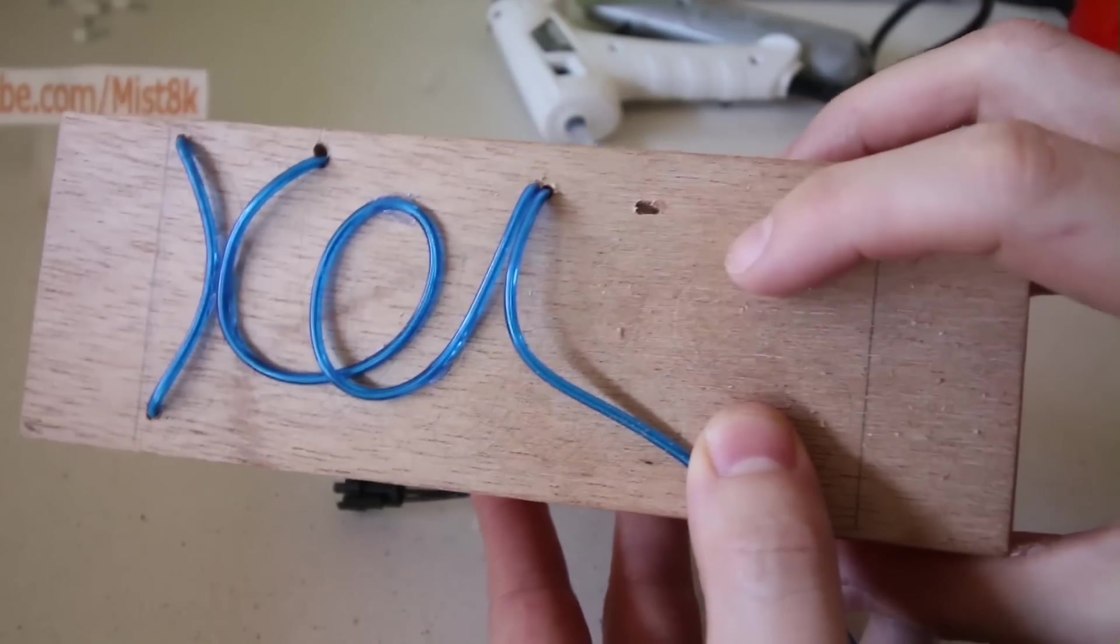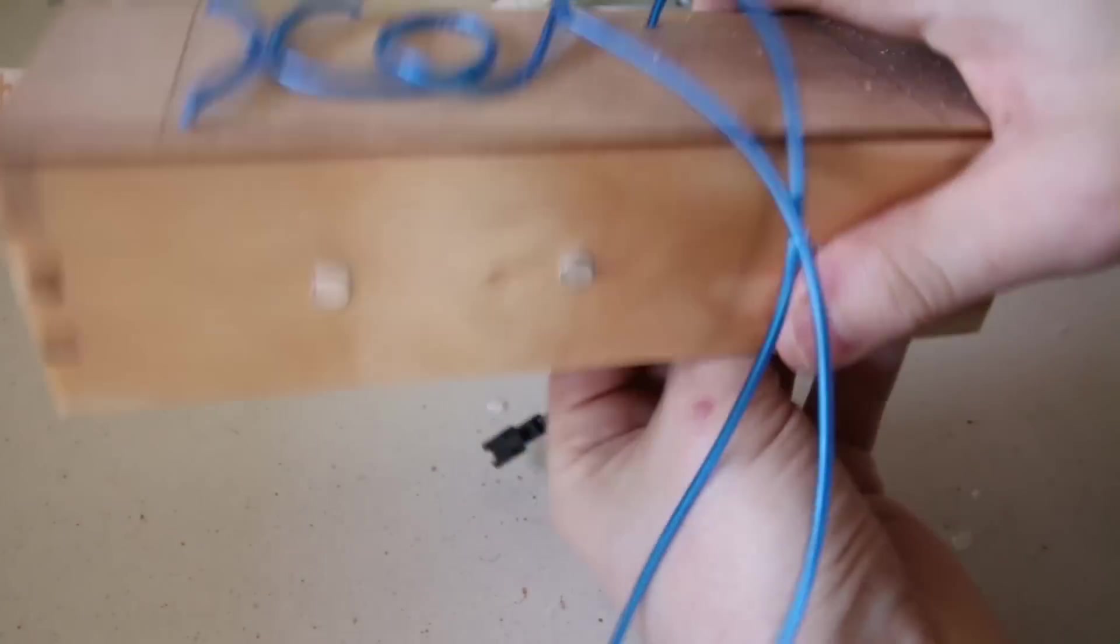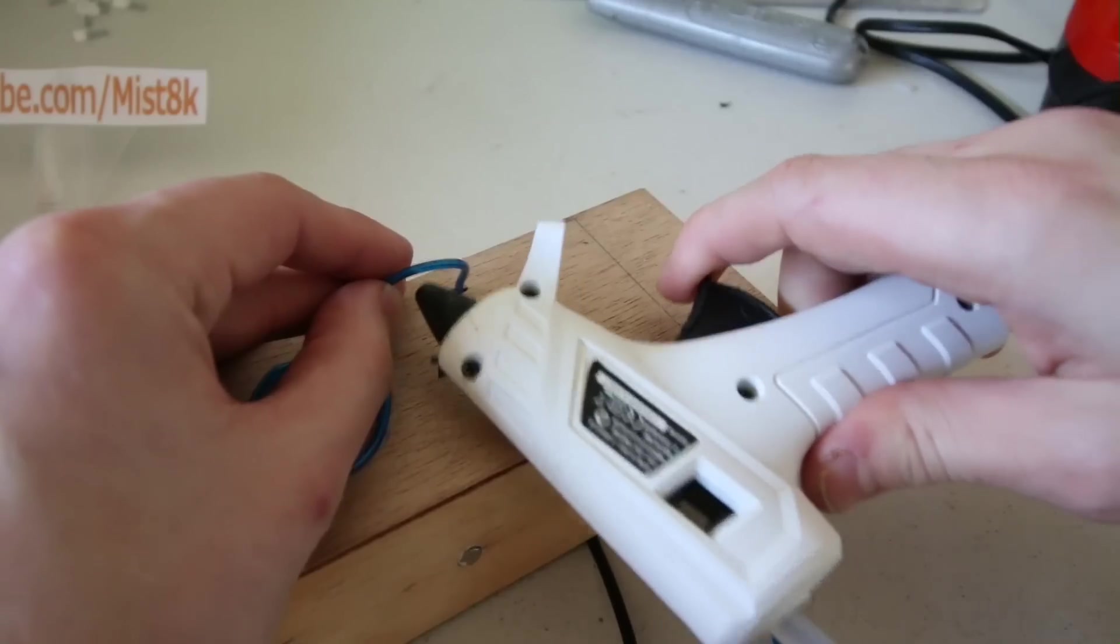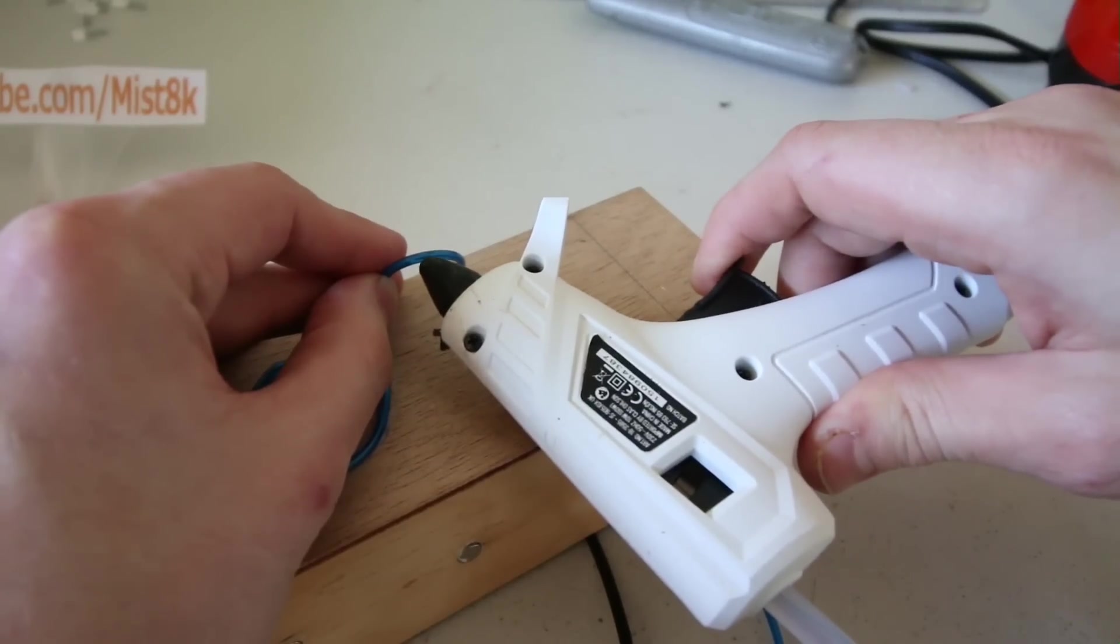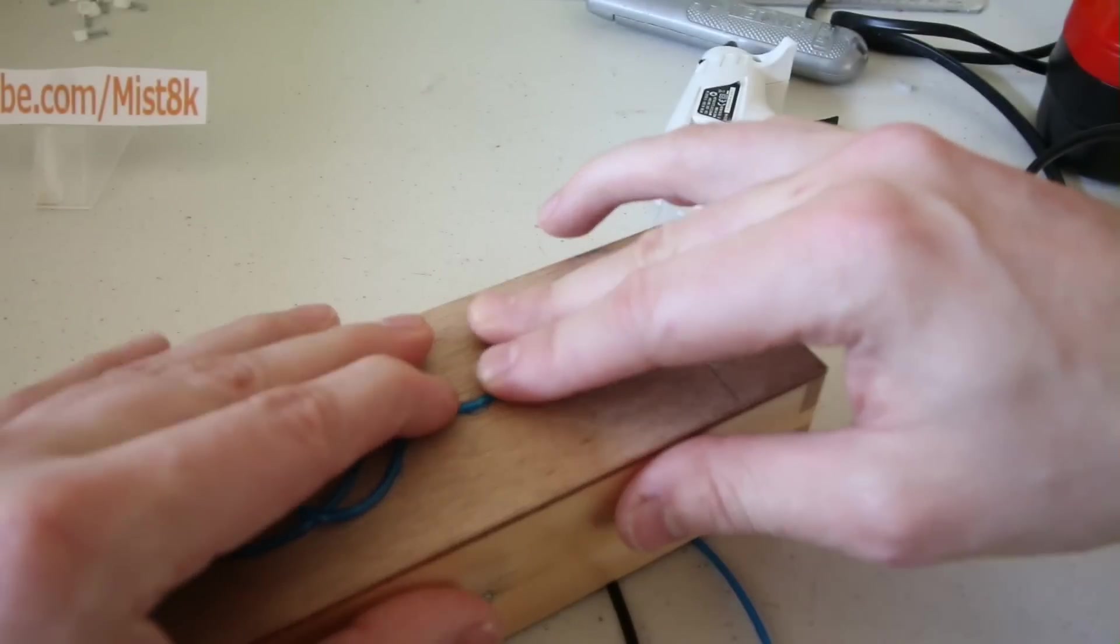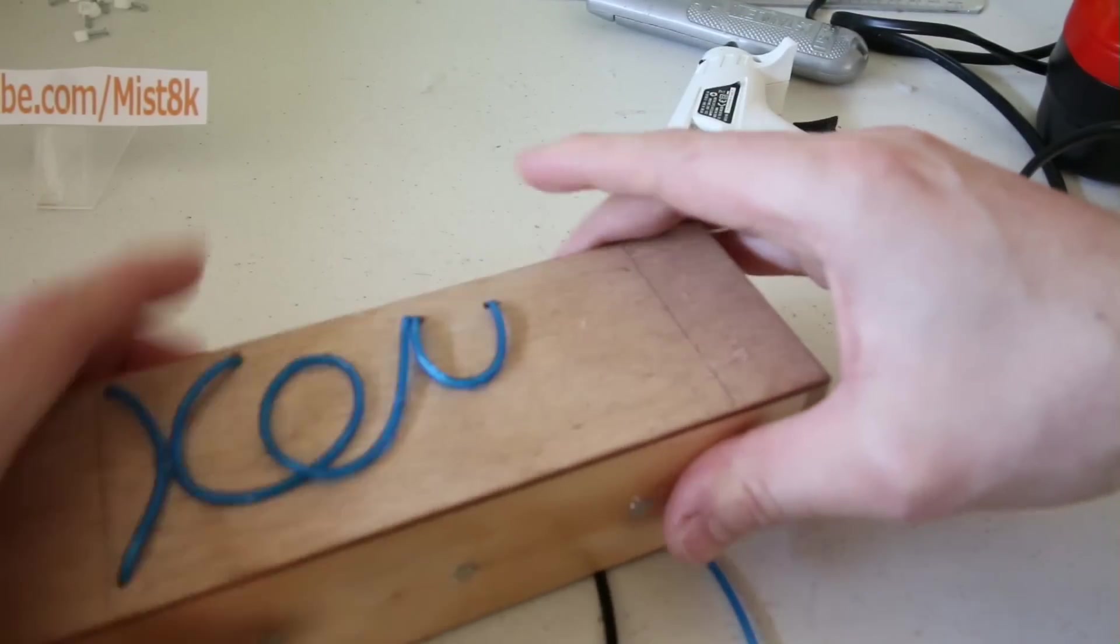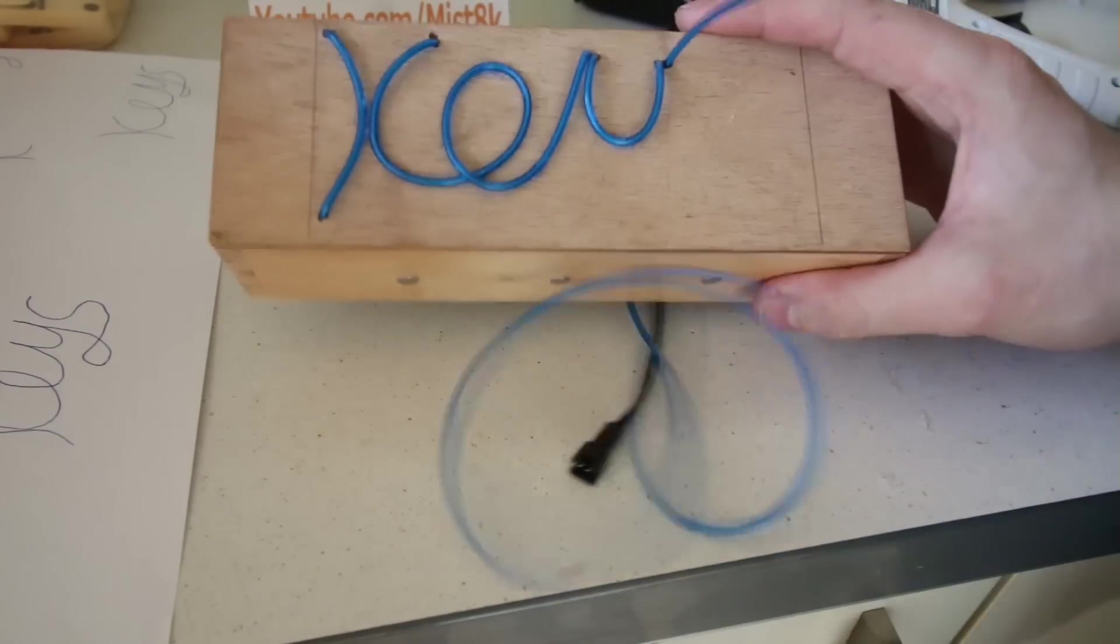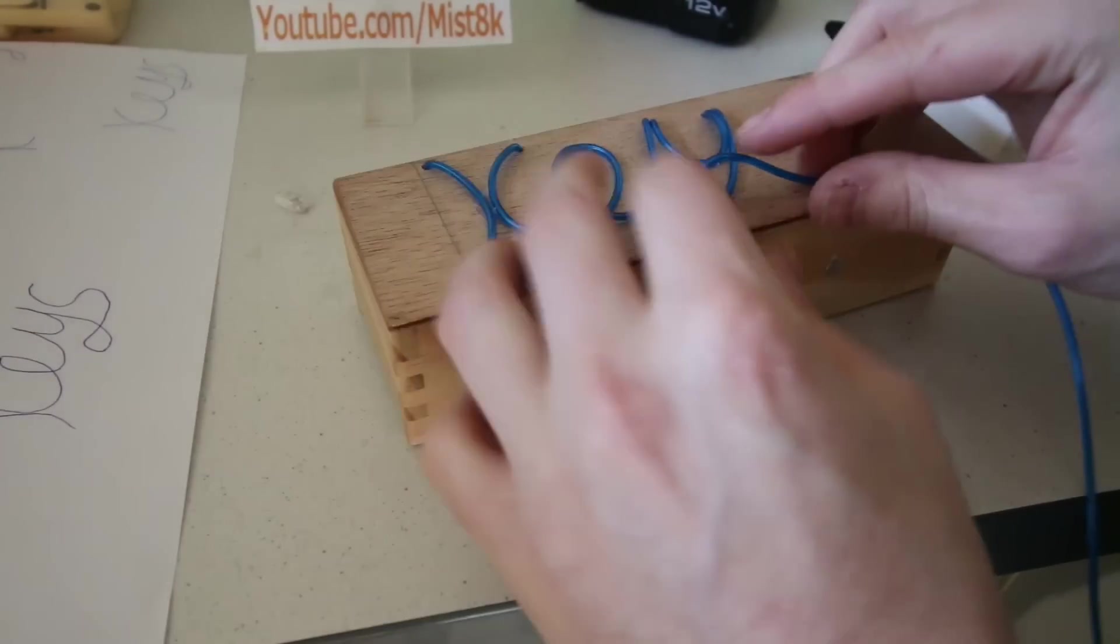I then made another large hole to create the top of the Y. This was then simply glued into place. I then ran the wire back on itself and looped it to create the Y.